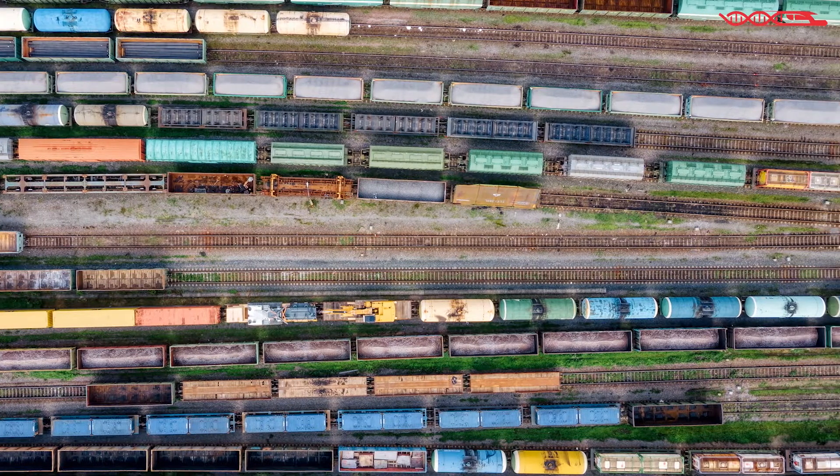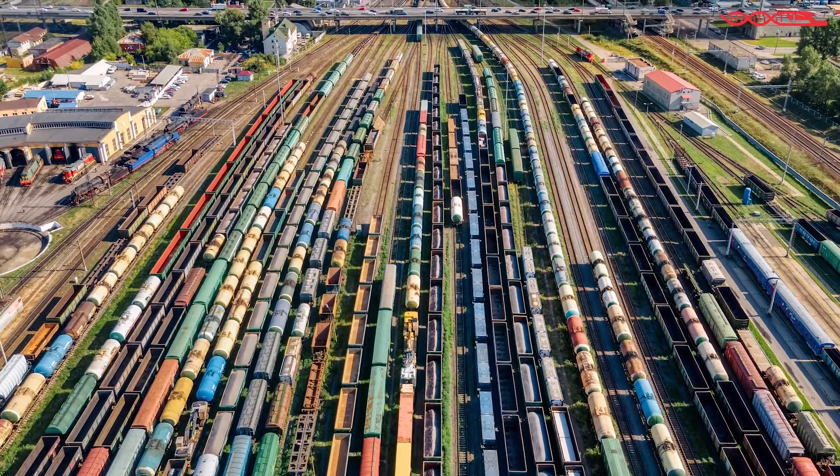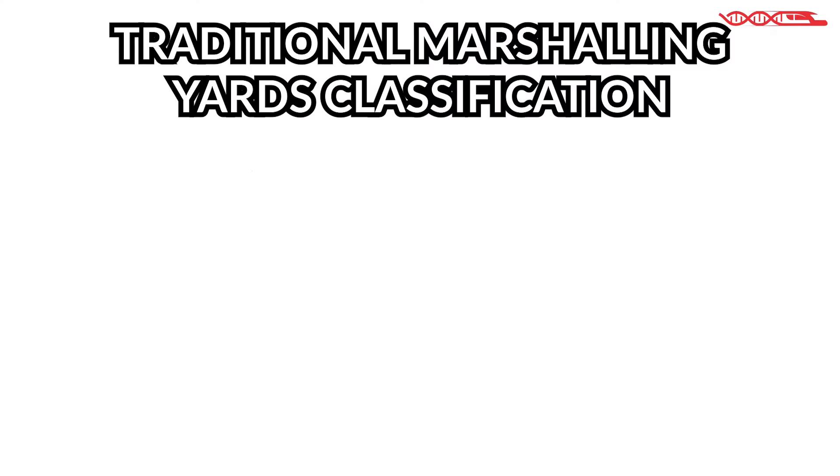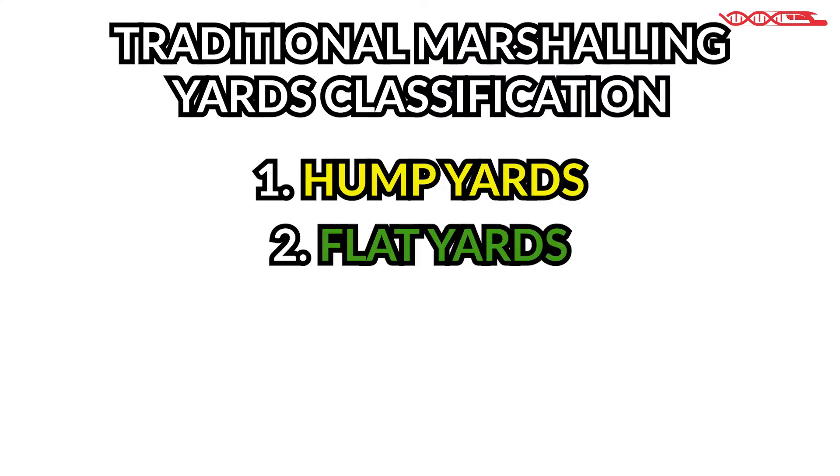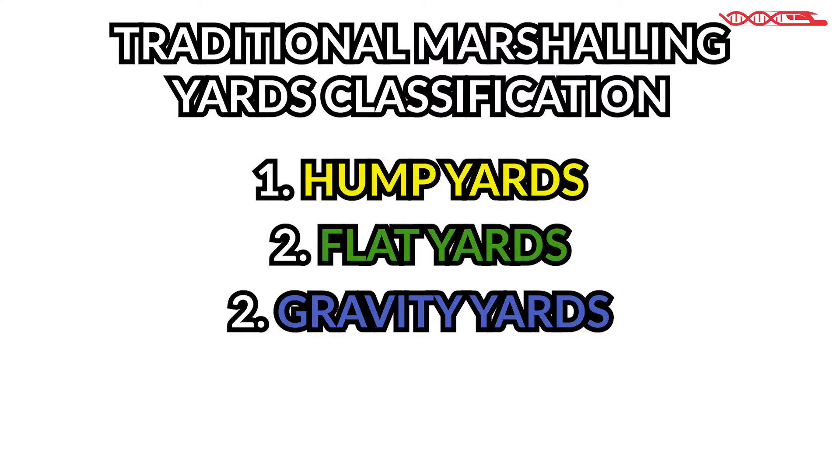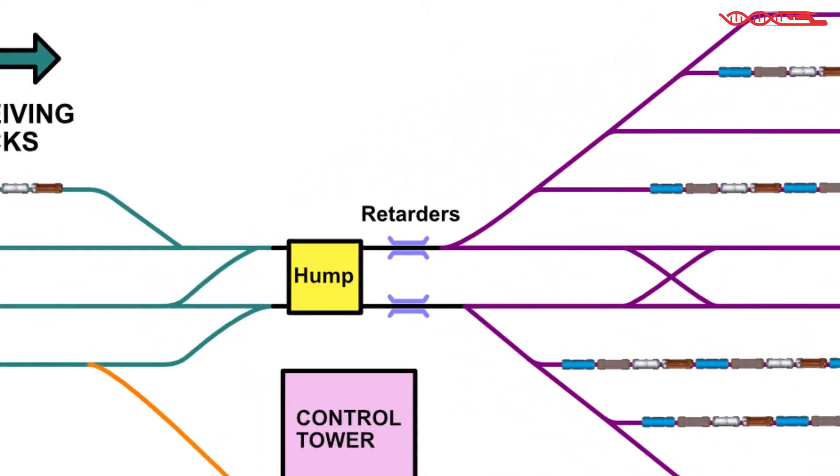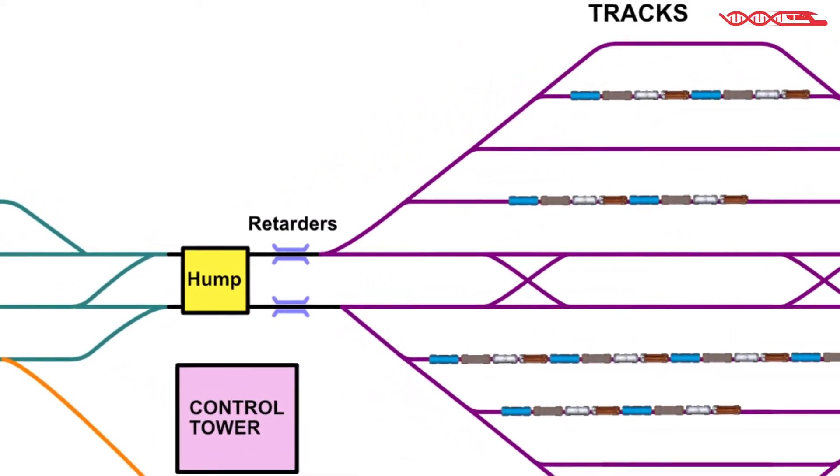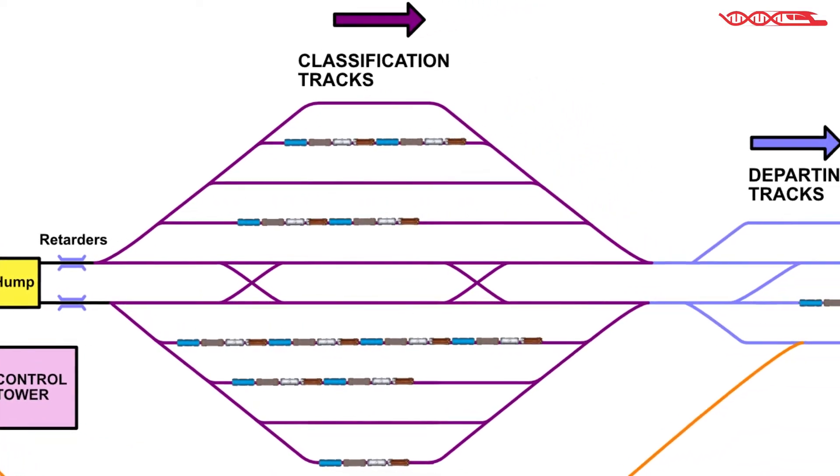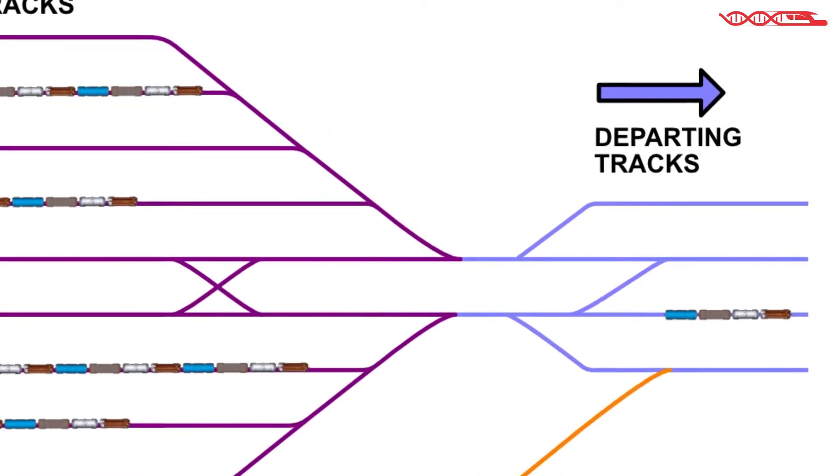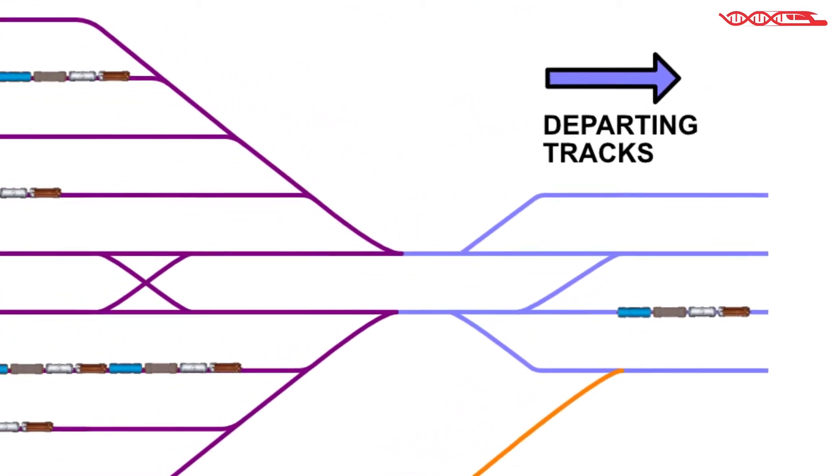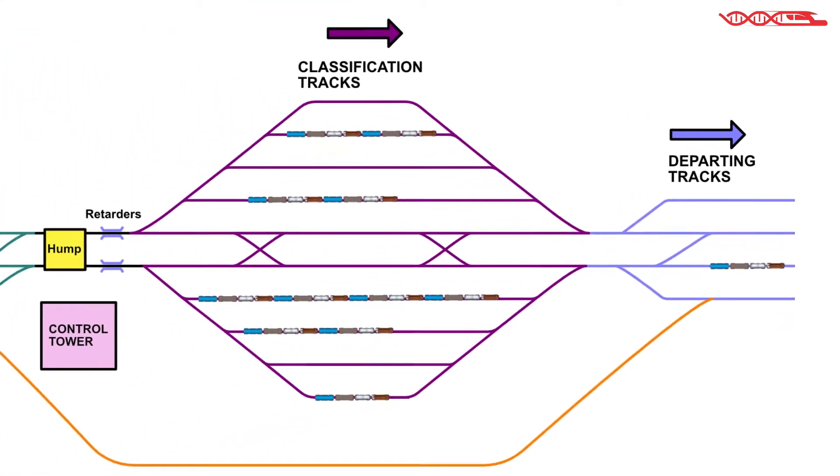Traditional marshaling yards can also be divided into three different types: first, hump yards; second, flat yards; and third, gravity yards. Hump yards can be divided into three different parts. In this place, all inbound trains are disassembled into rail cars which are then assembled in different train units to generate outbound trains.